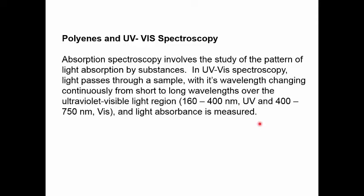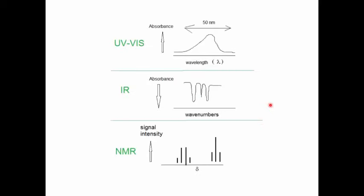It measures a quantity called light absorbance for each of these absorbing regions. In this graphic, I want to compare the signal observed in a UV-Vis spectrum with a signal for other spectroscopies. Typically, the signal in a UV-Vis spectrum is a rather broad absorption peak, much broader than the signals that we saw with infrared spectroscopy and NMR spectroscopy.